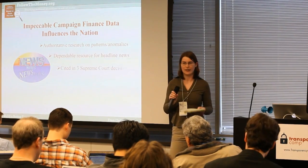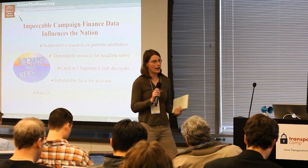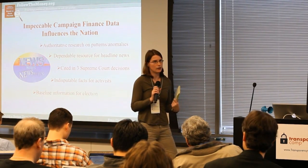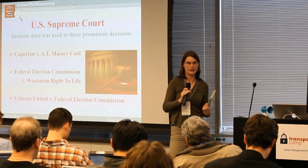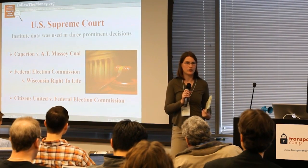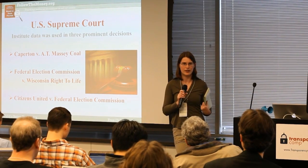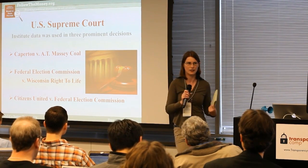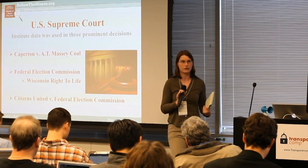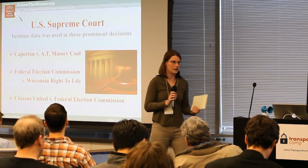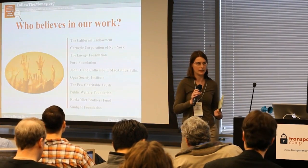Michael Malbin at the Campaign Finance Institute has also checked our numbers. When they first did that, they came back and said we were within 5% or 6% error. We looked at that and asked, did you take into account loan returns and repayments? They said no, and when they came back accounting for those, they found we were within 1% or 2%, which is really, really good. We've also been cited in three U.S. Supreme Court cases, including Citizens United.